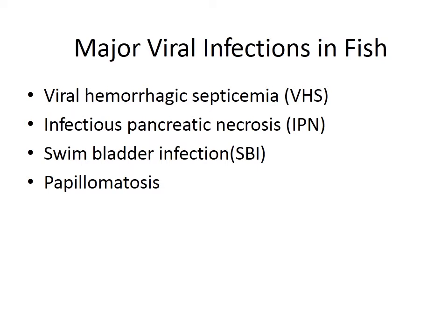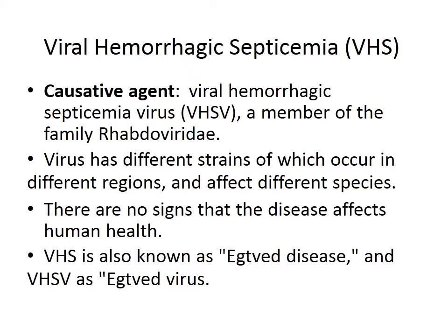Major viral infections in fish: Viral hemorrhagic septicemia (VHS) is caused by a rhabdovirus known as Viral Hemorrhagic Septicemia Virus (VHSV), a member of the family Rhabdoviridae. The virus has different strains which occur in different regions and affect different species. There are no signs that the disease affects human health.